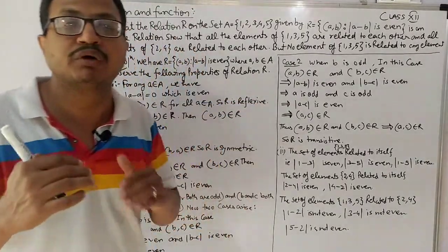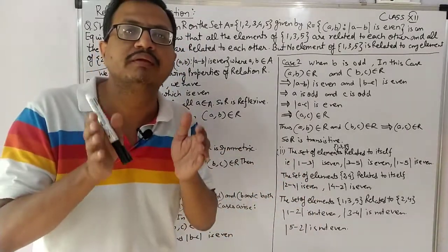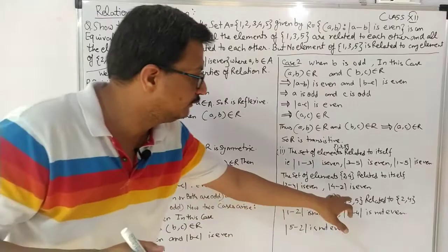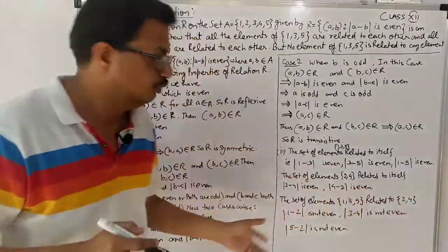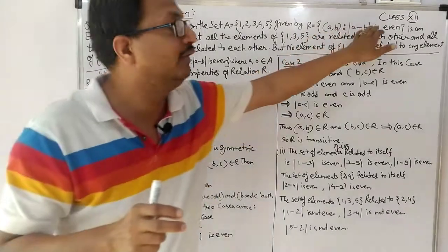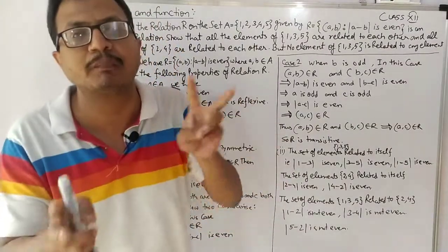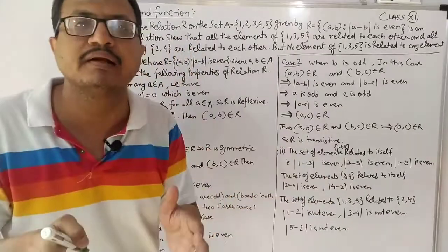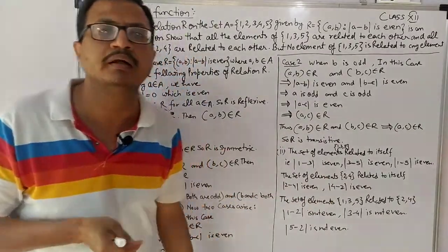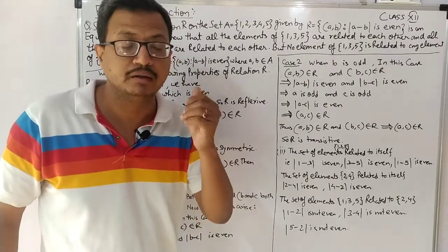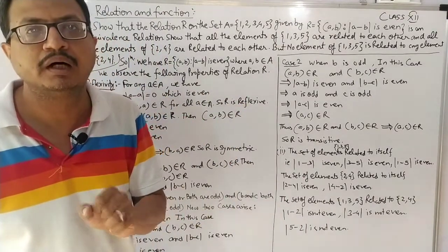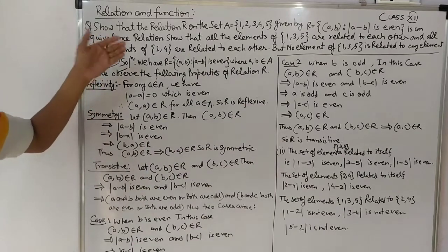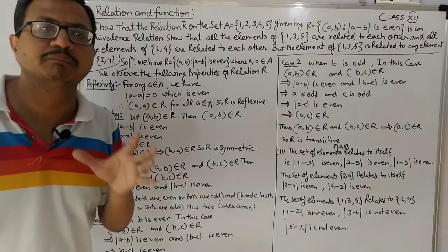Third part: इस बार {1, 3, 5} को {2, 4} से relate करना है। यहाँ तो नहीं होगा क्योंकि difference even तभी आता है जब दोनों odd हों या दोनों even हों। लेकिन यहाँ एक number even और एक odd होगा - even और odd का difference कभी भी even नहीं आएगा। जैसे 9-4=5 (odd)। तो इस तरीके से यह पूरा exam में लिखना है। Thank you।